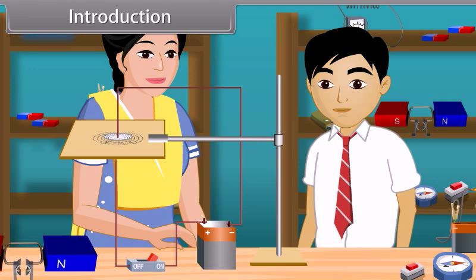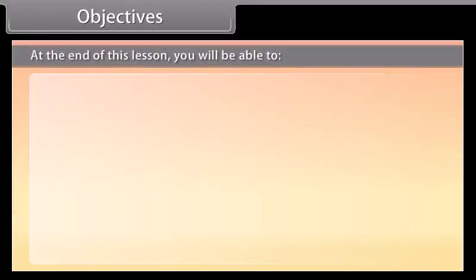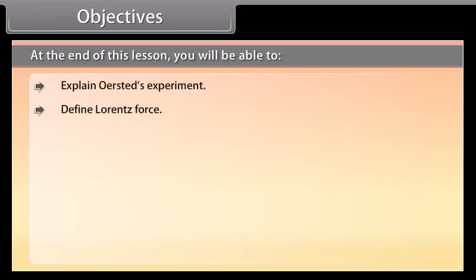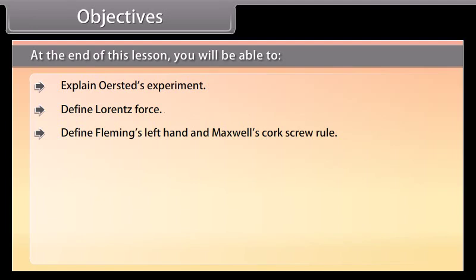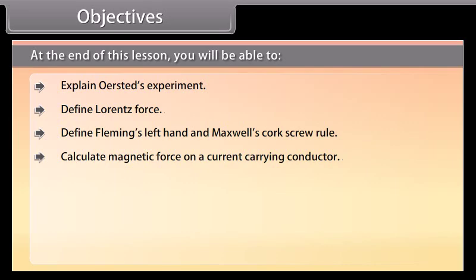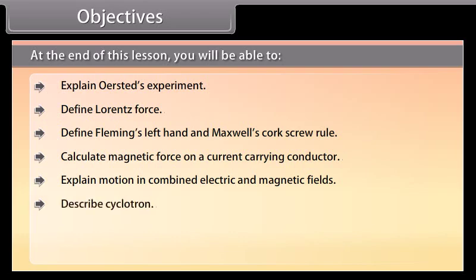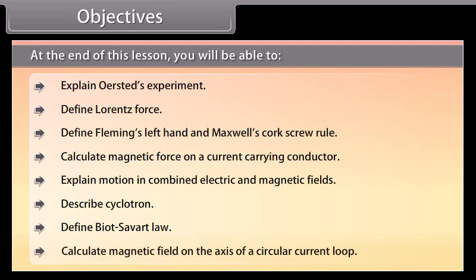Today we'll study more about the moving charges and magnetism. At the end of this lesson, you will be able to: explain Oersted's experiment, define Lorentz force, define Fleming's left-hand and Maxwell's corkscrew rule, calculate magnetic force on a current-carrying conductor, explain motion in combined electric and magnetic fields, describe cyclotron, define Biot-Savart law, and calculate magnetic field on the axis of a circular current loop.